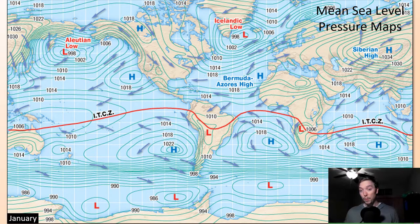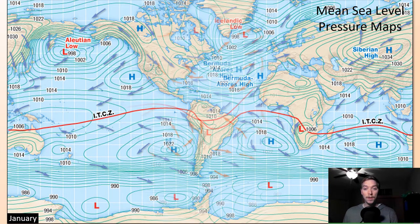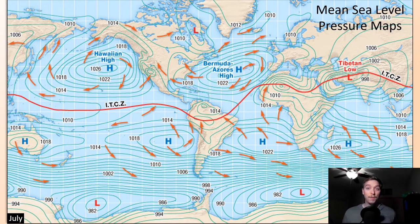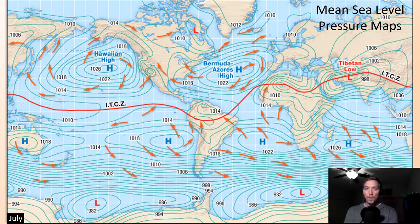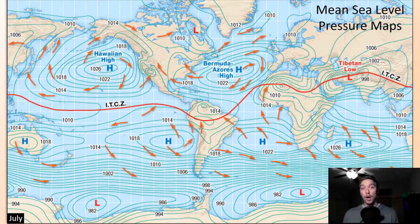In July, the pressure patterns look quite different. We see a reorganization — the Hawaiian high comes into play while the Aleutian low dissipates, a Tibetan low starts to form, and the Bermuda-Azores high is still functioning. This shows that our atmospheric circulation system is incredibly dynamic, driven largely by thermal differences related to seasonal variations and thermal gradients across our world.